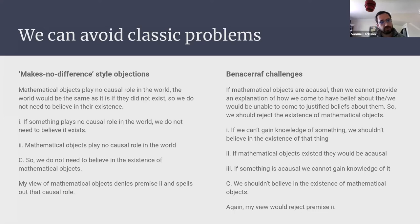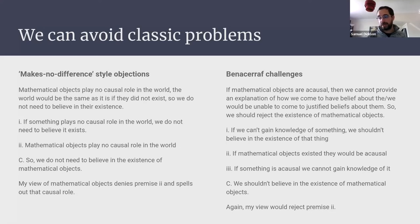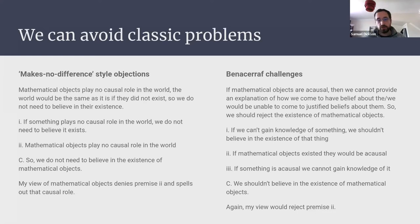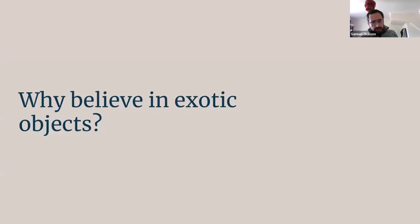The platonist should be happier with my theory because I can dodge these problems and reduce some of the inherent mystery by saying what kind of object mathematical objects are. Equally, if the nominalist isn't happy with my theory, they at least have to come up with new objections, because I can dodge the classic ones thrown at platonism.